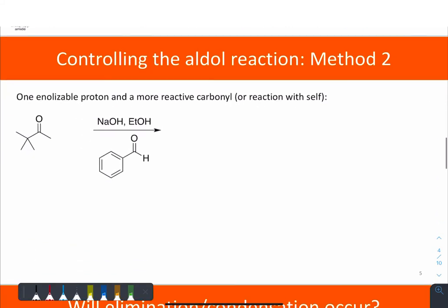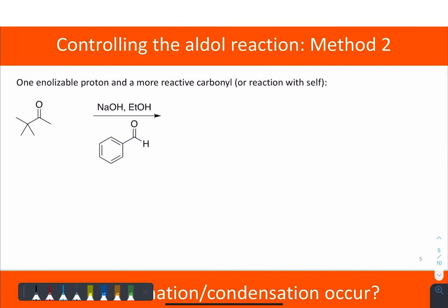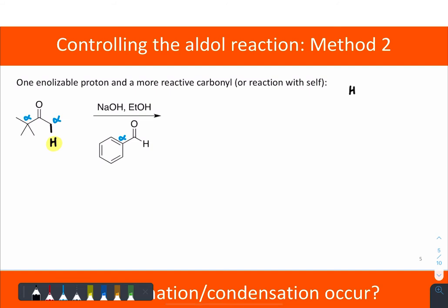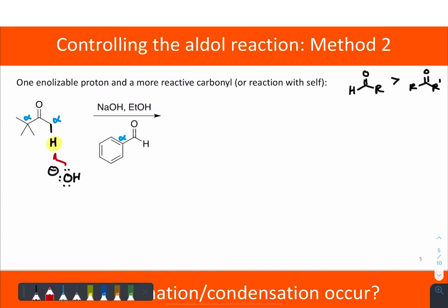Method two: instead of a stepwise formation, in this case we choose very specific substrates where there is only one enolizable proton — only one spot with an alpha proton. All the other alpha carbons don't have any protons on them. Additionally, one carbonyl is more reactive than the other. Remember that aldehydes are more reactive than ketones. When we add in a base, we again generate the enolate, and that enolate is going to react with the most electrophilic species present — the aldehyde.